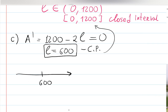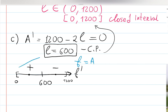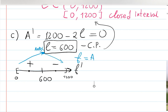I'll use a sign line for the first derivative. With the restriction from 0 to 1200, I'll test L = 1: A′ = 1200 − 2 = positive. Test L = 1000: 1000 × 2 = 2000 > 1200, so A′ is negative. The original function A is increasing up to L = 600, then decreasing — so L = 600 is a maximum.